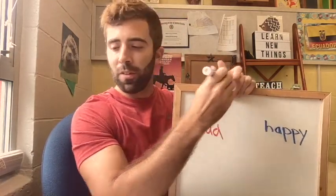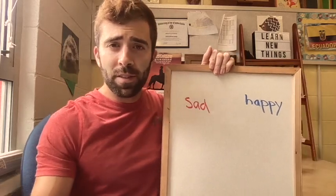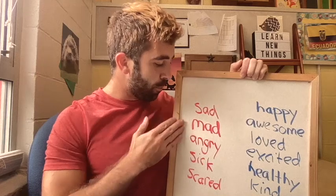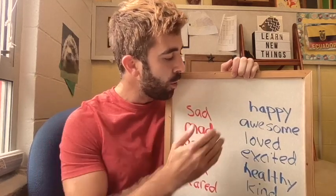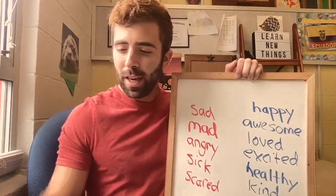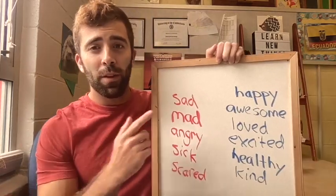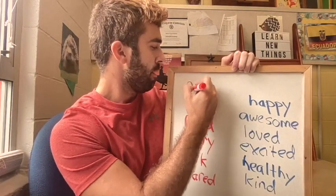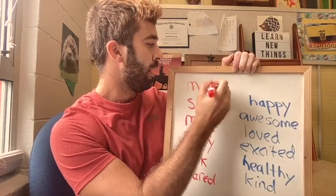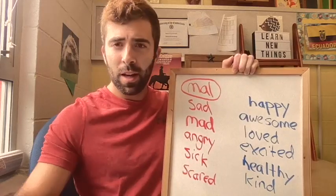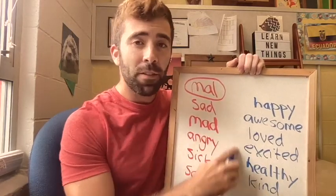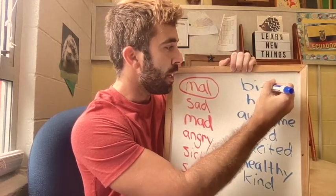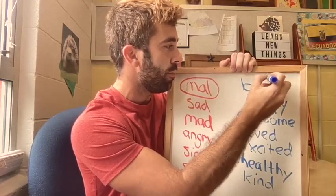Ask what other feelings they might have. Someone might say 'feeling mad.' I have all of the bad feelings written in rojo and all of the good feelings in azul. There's a Spanish word for feeling bad — that word is 'mal' — and you circle it to separate it from the rest. And there is a Spanish word for feeling good or feeling well: 'bien.'